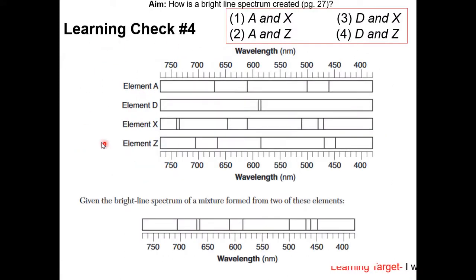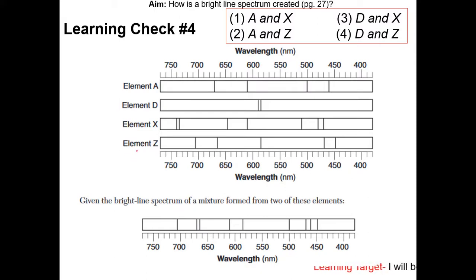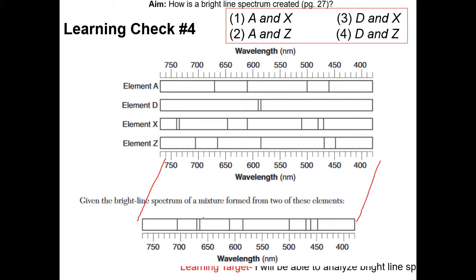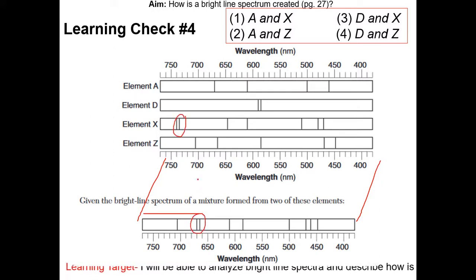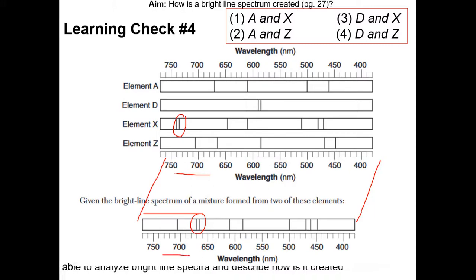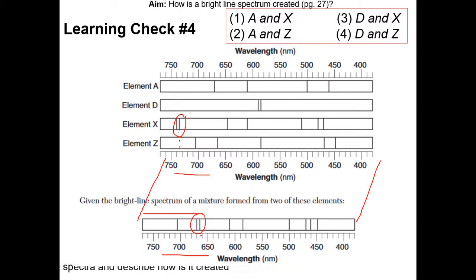Learning check number four: which of these elements are in this mixture? Pause the video and resume once you have the answer. Notice that for this Regents question, they are attempting to trick you by offsetting the spectrum on purpose, so it's very easy to get tricked. For example, you might think these two lines are referring to those two lines, but they're not. How do you know? You check the wavelengths. Whenever you come across a question like this, check the wavelengths to make sure they line up. These two lines are very close to 750, while those two lines are between 700 and 650 — so they are not the same. Therefore X is not in there.